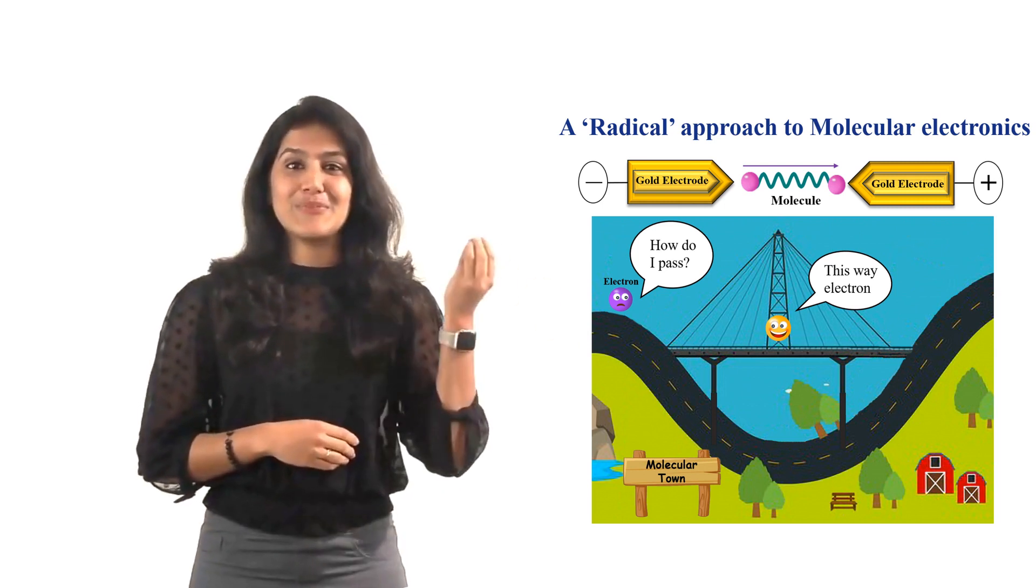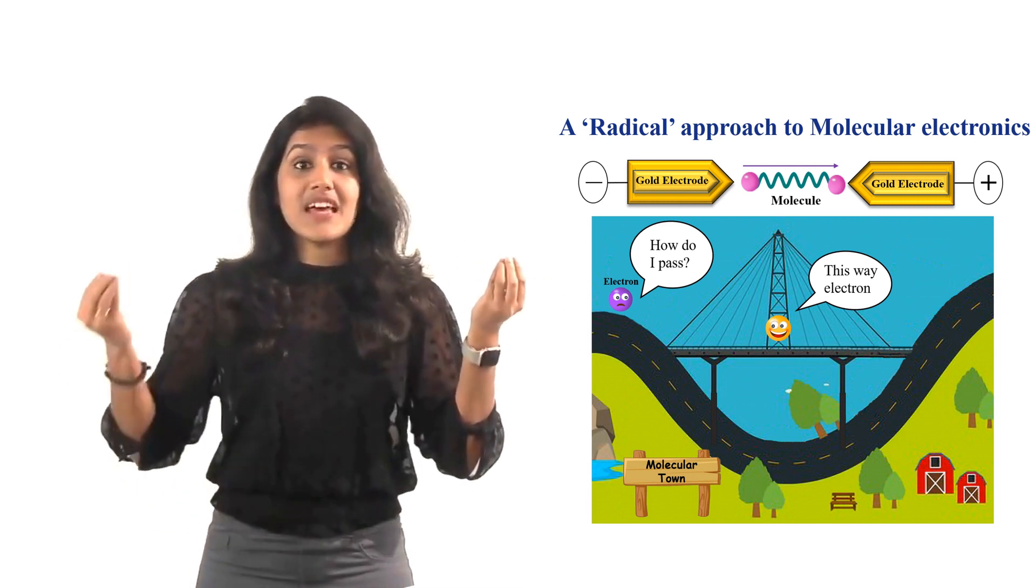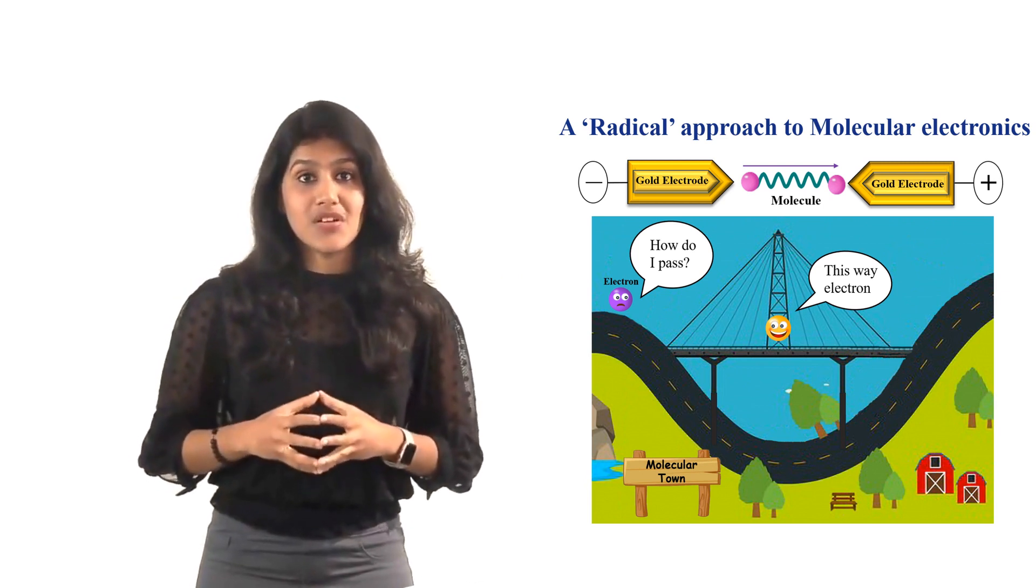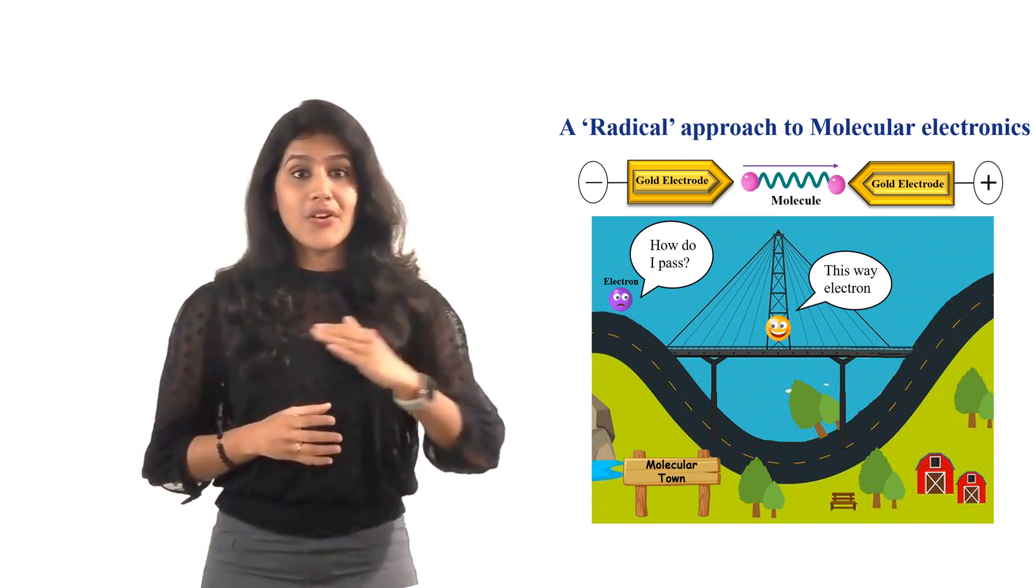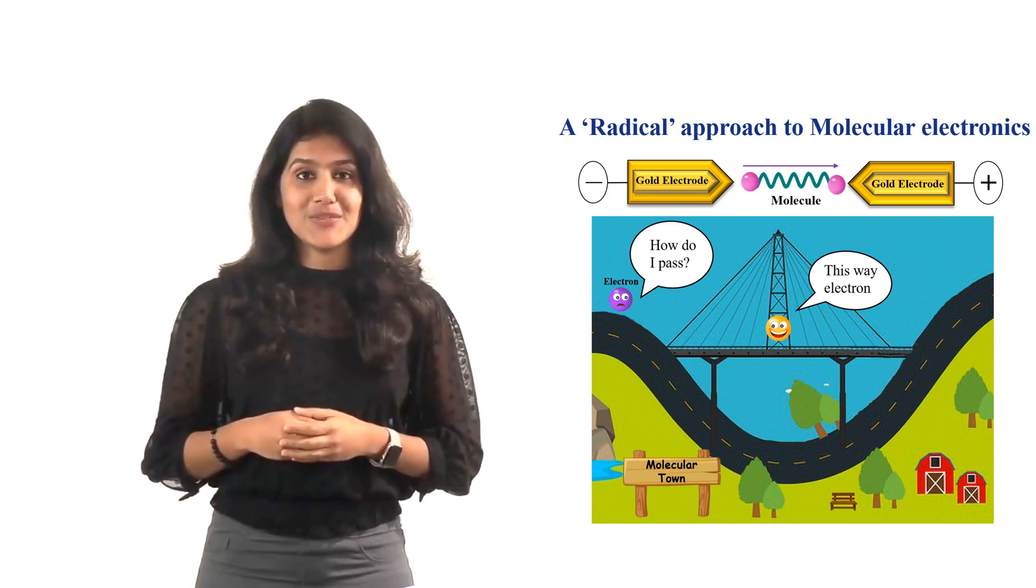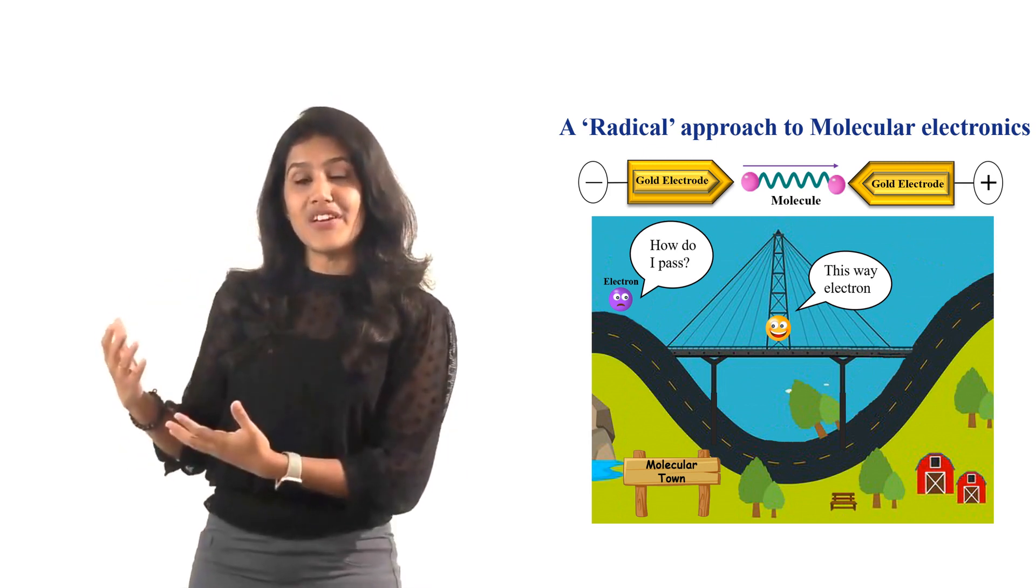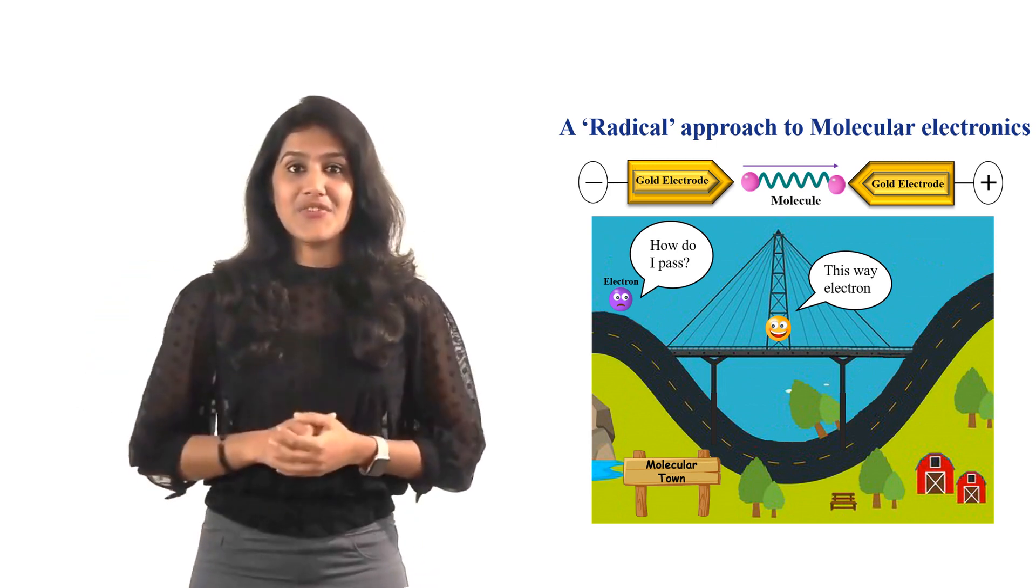Like poets use letters to build words, chemists use atoms to build molecules. Molecules are the smallest stable structure that can facilitate flow of current or flow of electrons through them. Thus in molecular electronic research scientists like me study molecules to harness these electronic features.